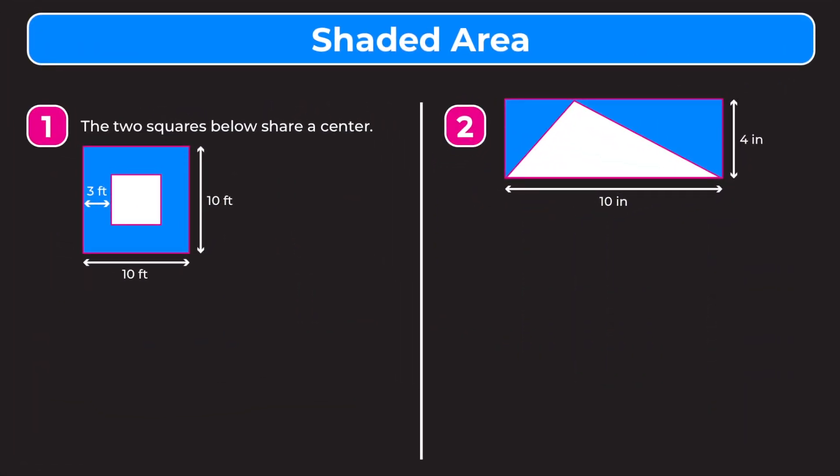In this video we're going to learn how to find shaded area, and in each of these problems we're going to be finding the blue shaded area. Let's jump into example one — the two squares below share a center. To find the shaded area, we want to find the area of the outer shape and subtract the area of the inner shape from that.